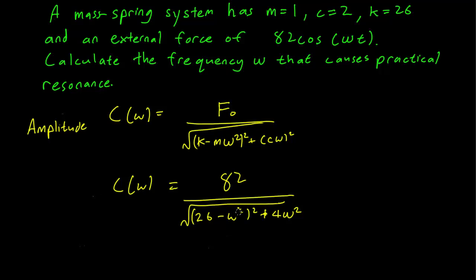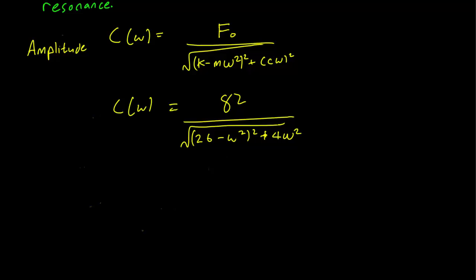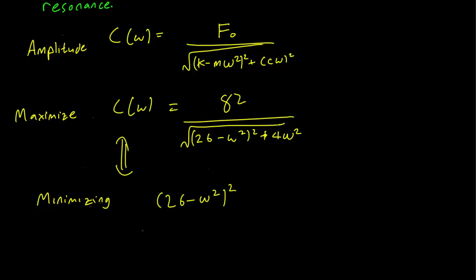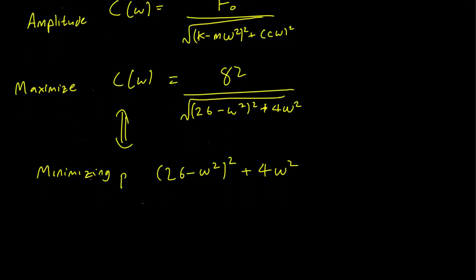To clarify, we want to maximize the function C of omega. The most direct way would be to take the derivative and set it to 0, and that's indeed the way the book does it. But a much easier approach is this: maximizing C is the same thing as minimizing the denominator. So we want to minimize the polynomial: 26 minus omega squared, quantity squared, plus 4 omega squared.